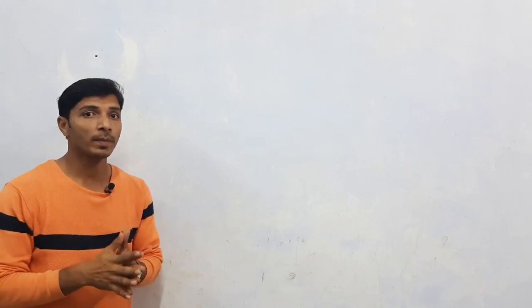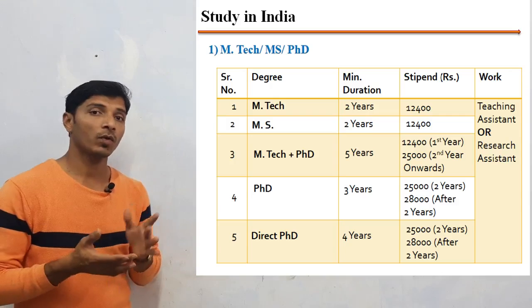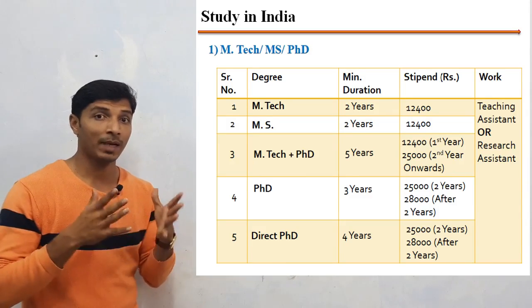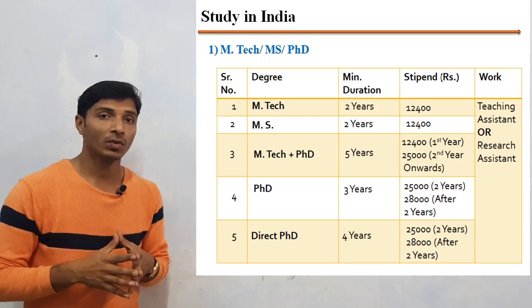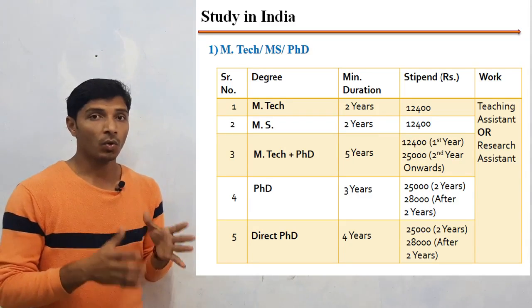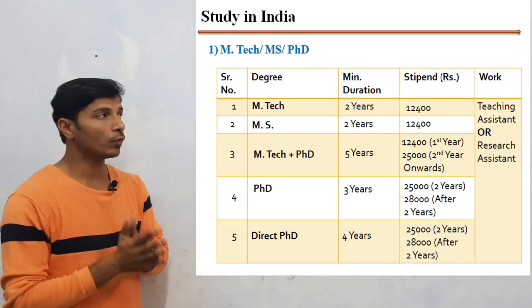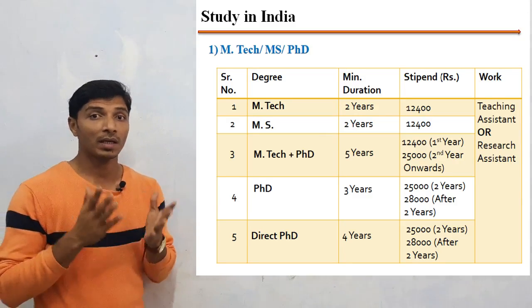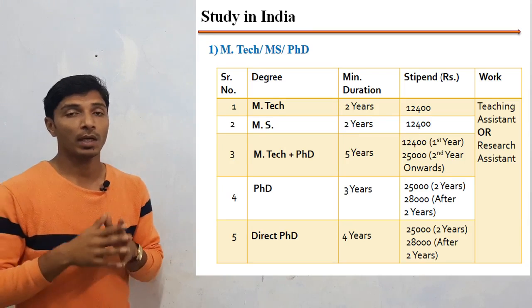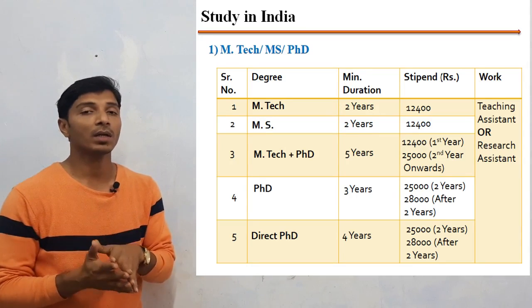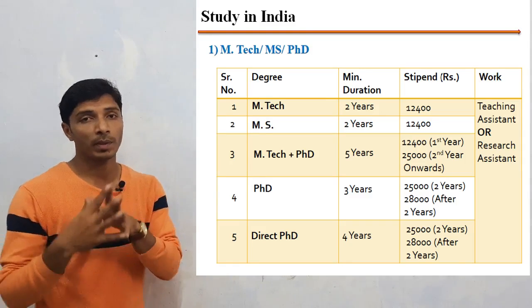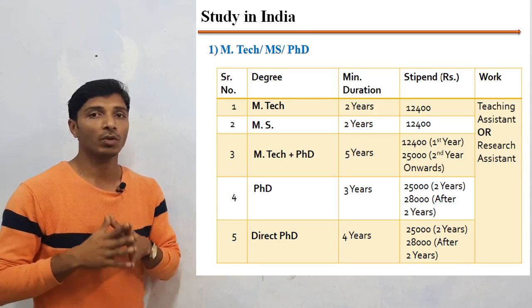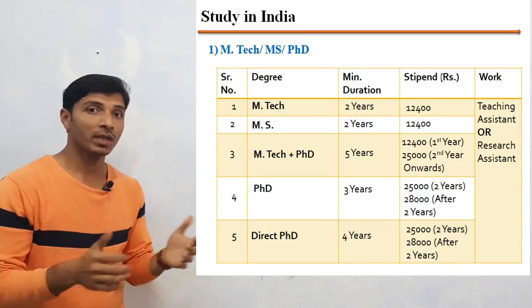If you decide to go for higher studies in Indian universities, first choice is M.Tech. If you have a very good rank or GATE score, you can apply to IITs for M.Tech. The duration is 2 years and you will be paid ₹12,400 as a stipend. For that, you need to work as a teaching assistant or research assistant, with a workload of 8 hours a week — conducting practicals for graduate students or working on research projects.